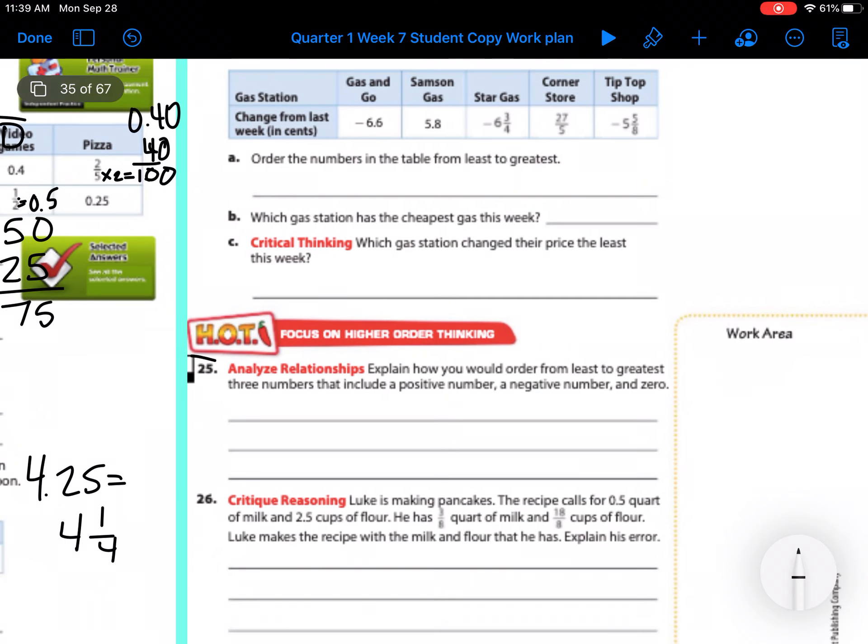And then our last one is 25. Explain how you would order from least to greatest three numbers that include a positive, a negative, and a zero. How would those be ordered? Explain that below. That's super easy. That is on your own.